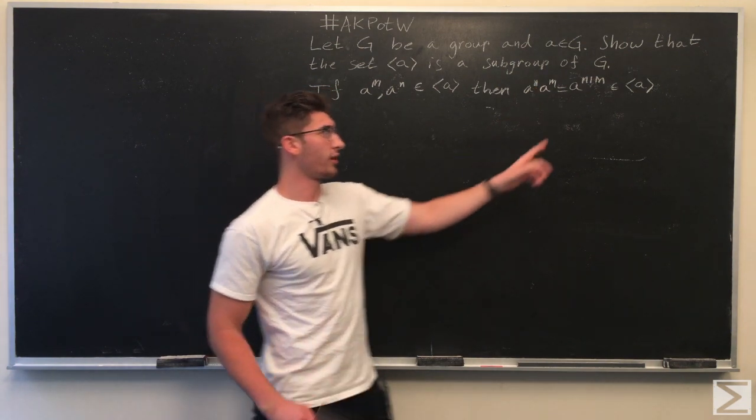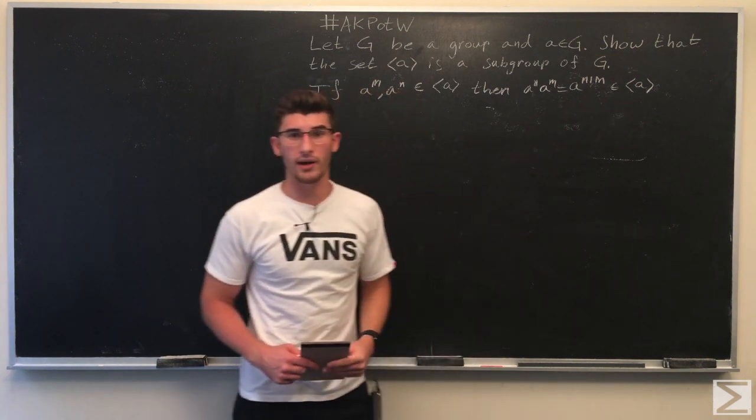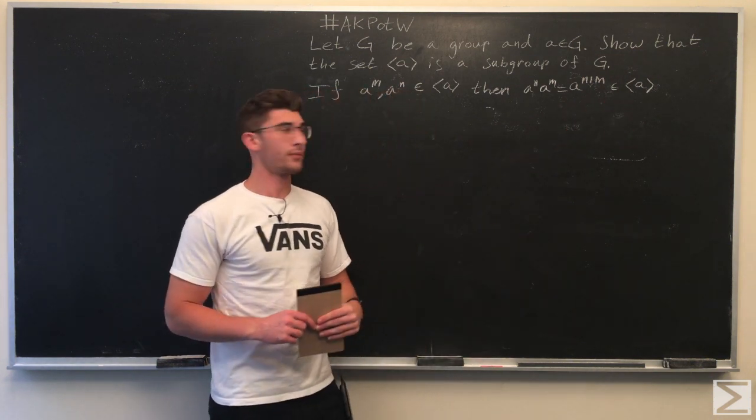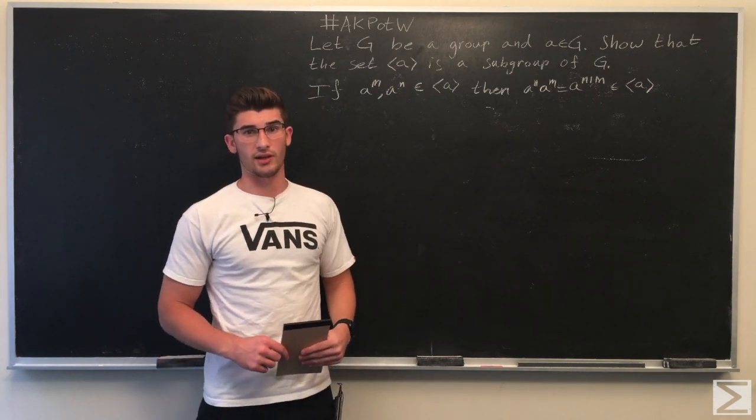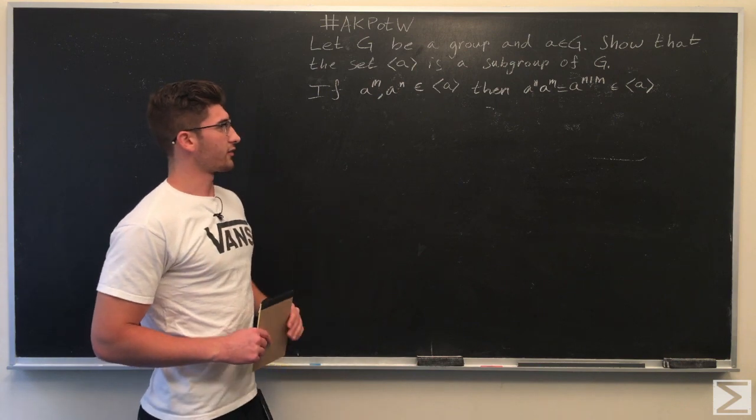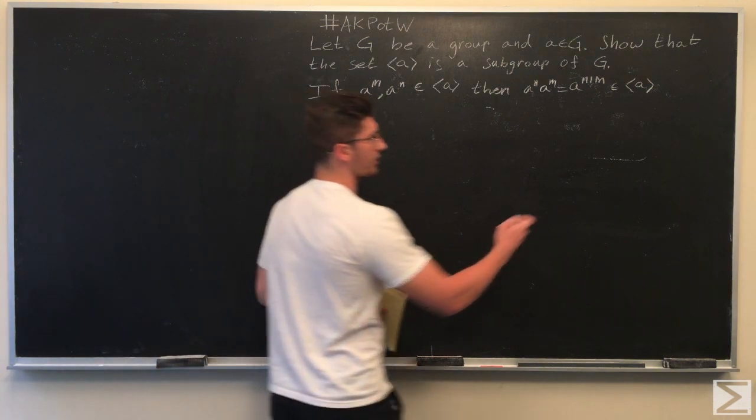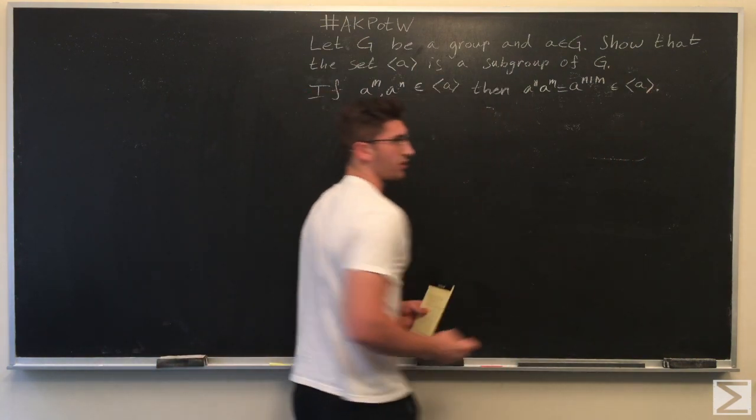which is also an element of the things generated by A, which means that the set of things generated by A is closed under multiplication. So that's the first thing that we're after. We know that it is closed under multiplication.